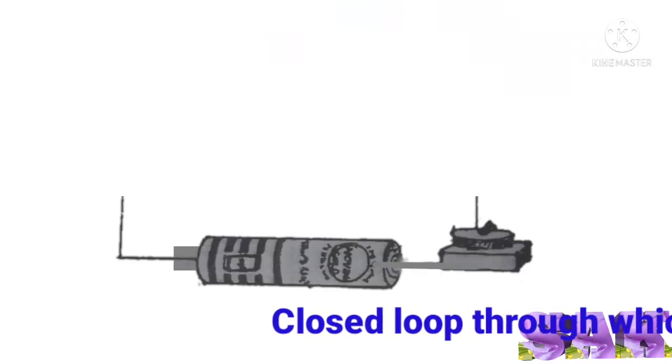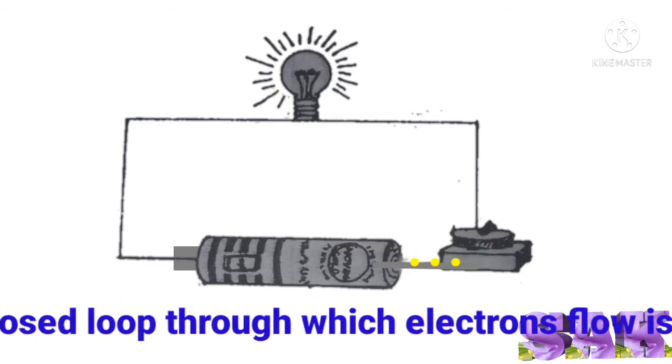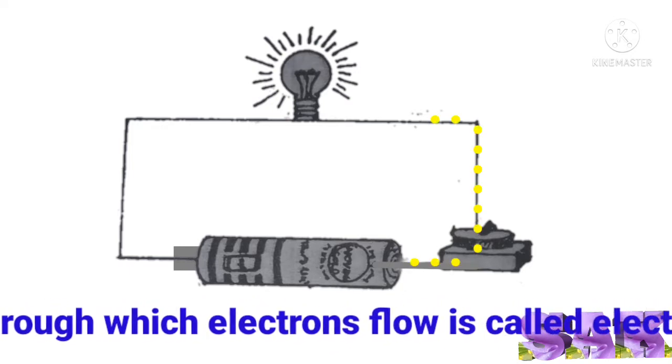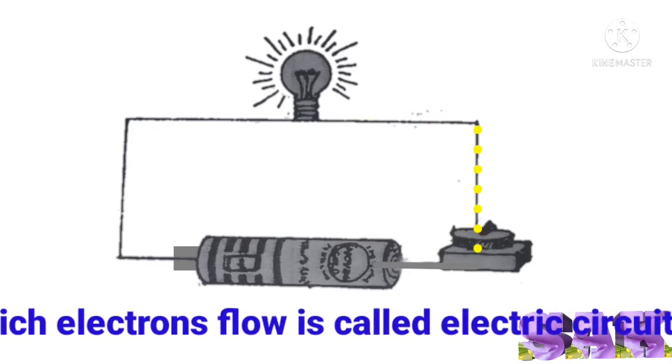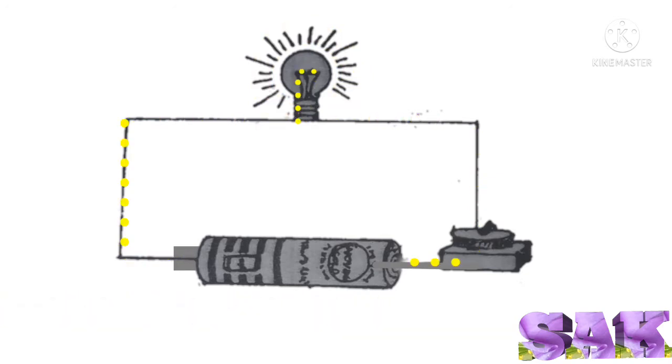Electric circuit is defined as the closed loop through which the electrons flow. Here closed loop means a closed connection from one end to another.